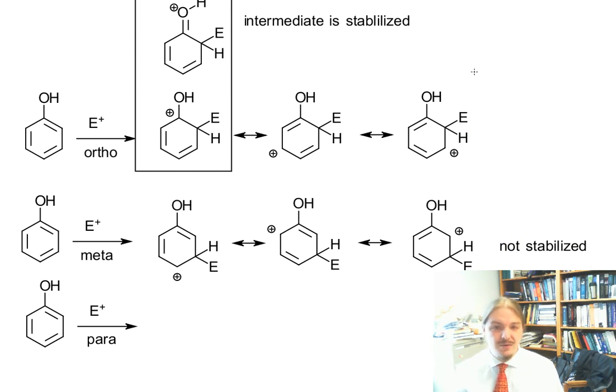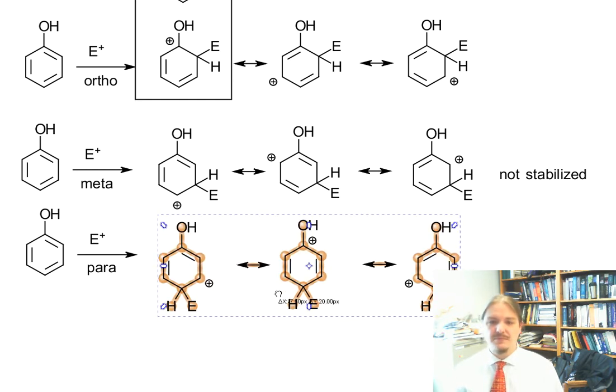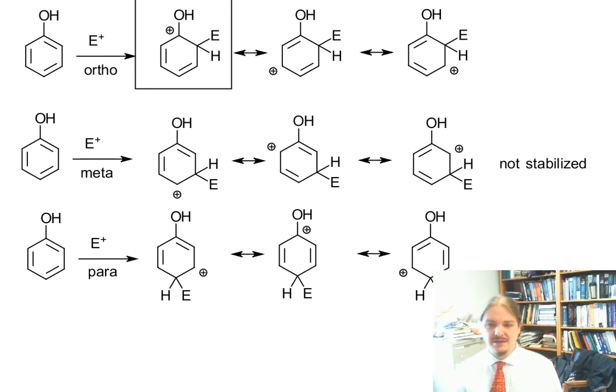The ortho intermediate is stabilized. Meta intermediate is not stabilized. You've probably guessed what's coming. When we look at the intermediates in the para case, again we get positive charge ortho, para, and ortho. And one of those intermediates as an additional resonance structure. One of those resonance structures has an additional resonance contributor.